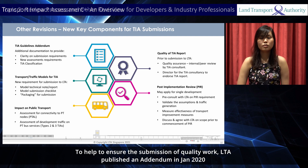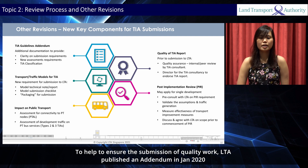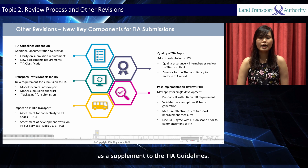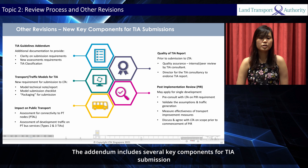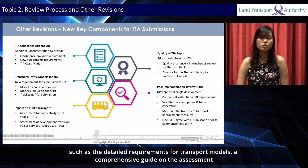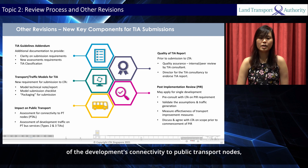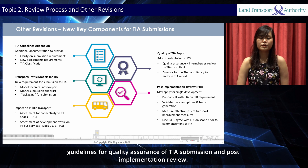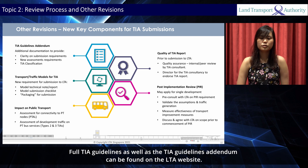To help ensure the submission of quality work, LTA published an addendum in January 2020 as a supplement to the TIA guidelines. The addendum includes several key components such as detailed requirements for transport models, a comprehensive guide on assessing the development's connectivity to public transport nodes, guidelines for quality assurance of TIA submissions, and post-implementation review. The full TIA guidelines and addendum can be found on the LTA website.